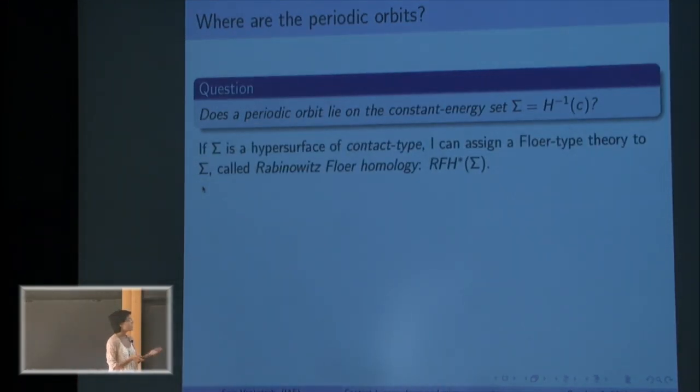So if my constant energy set is a hypersurface, if it satisfies some technical conditions like it's something called contact type, I can assign a Floer type theory to Sigma and this hopefully gives me information about the dynamics on Sigma.